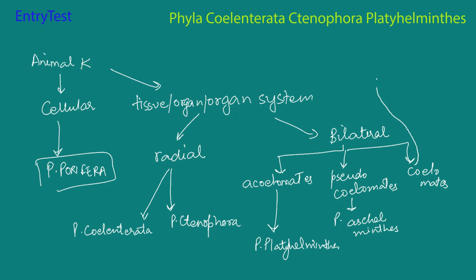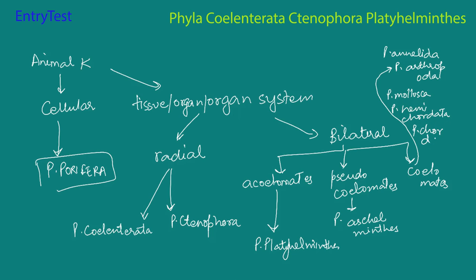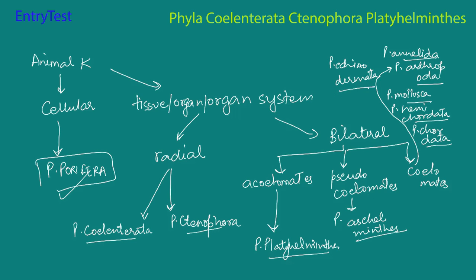In the coelomates there are approximately six phylums: phylum Annelida, phylum Arthropoda, phylum Mollusca, phylum Hemichordata, phylum Chordata, and phylum Echinodermata. So these are the phylums we will be studying. We have already covered Porifera. We are going to start with Coelentrata and then cover Ctenophora, Platyhelminthes, Aschelminthes, Annelida, Arthropoda, Mollusca, Hemichordata, Chordata, and Echinodermata.